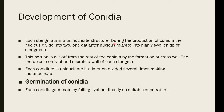Regarding the development of conidia: each sterigma is a uninucleate structure. During conidia production, the nucleus divides into two daughter cells. Each daughter nucleus migrates into the swollen tip of the sterigma. This portion is then cut off from the rest by the formation of a cross wall. The protoplast contracts and secures the wall of each sterigma, and the protoplast becomes a separate cell. Each conidium is thus uninucleate, though multinucleate conidia can occasionally be found.